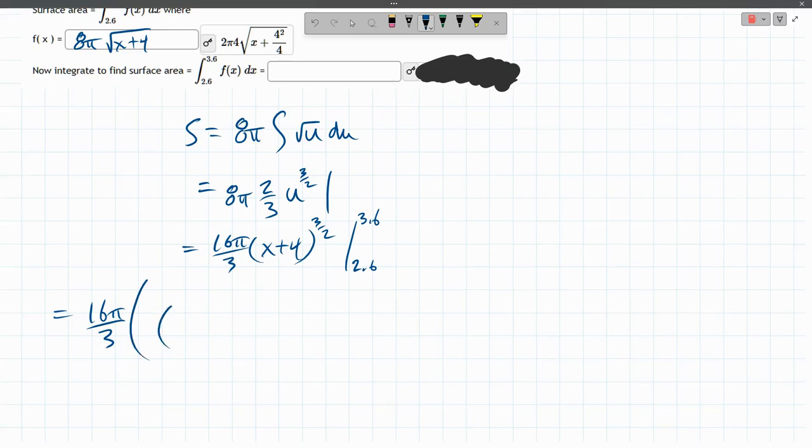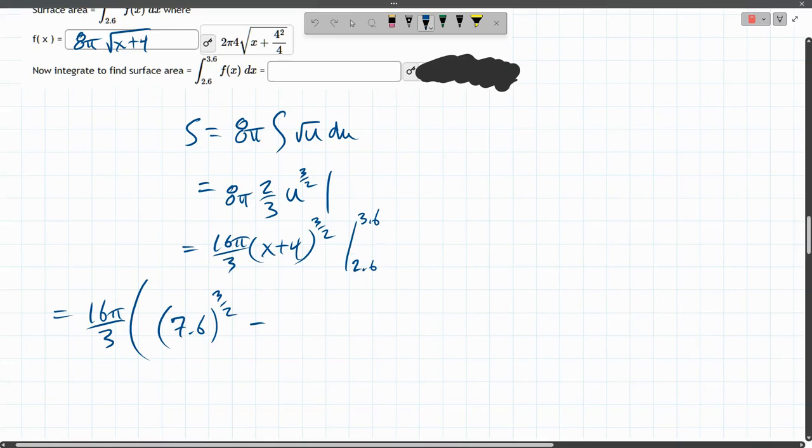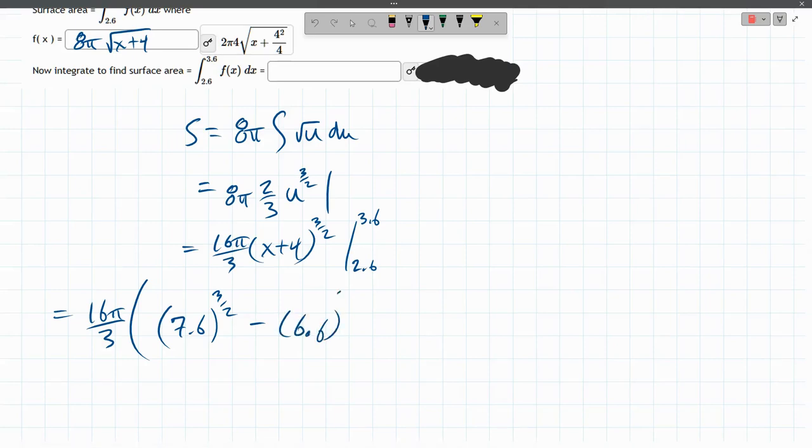All right. 3.6 plus 4 is 7.6 to the 3 halves minus 2.6 plus 4 is 6.6 to the 3 halves. All right. If I was doing all this by hand, this is how I would leave it.